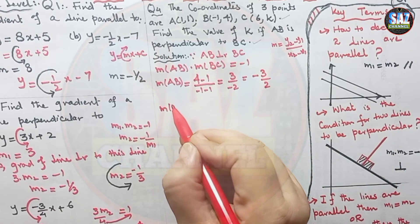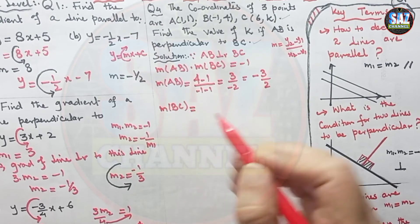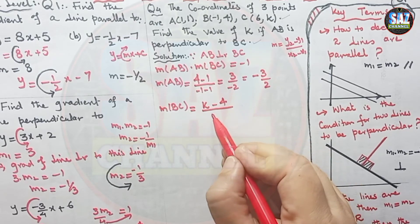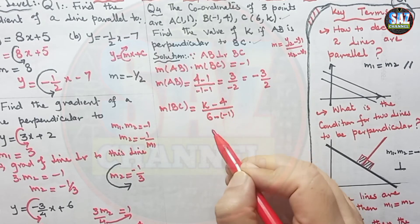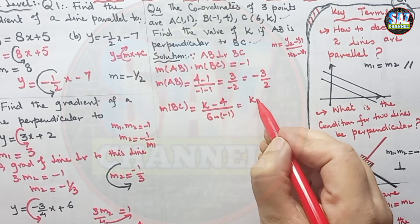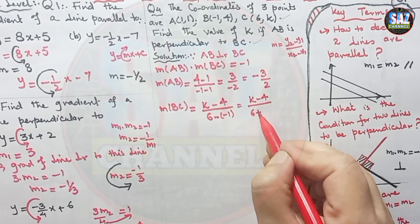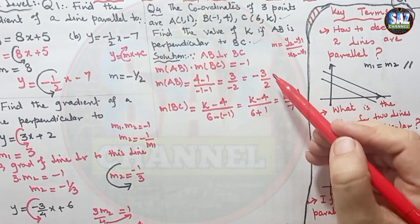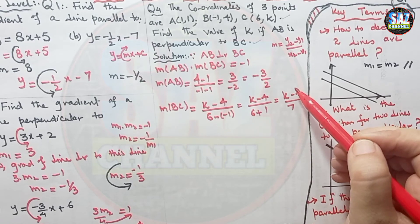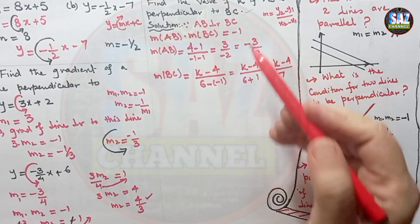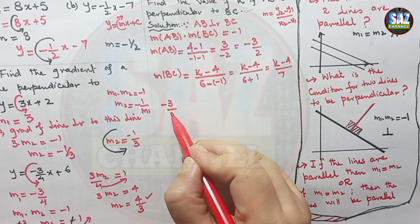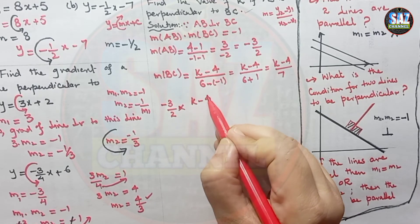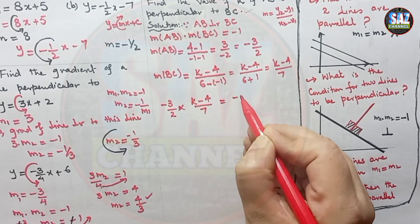Now, gradient of BC: using points B(−1, 4) and C(6, k), we get y2 minus y1 over x2 minus x1, which is k minus 4 upon 6 minus (−1), giving k minus 4 upon 6 plus 1, which equals k minus 4 upon 7. Now substituting into the perpendicularity condition: minus three-halves multiplied by k minus 4 over 7 equals minus 1.